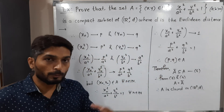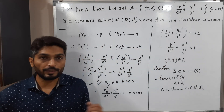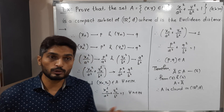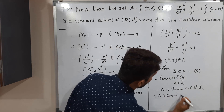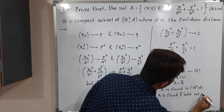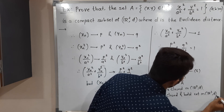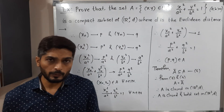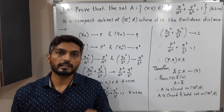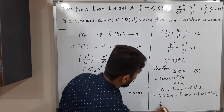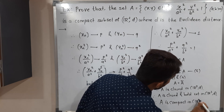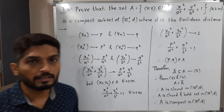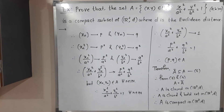Combining both parts: in the first part we proved A is bounded, and in the second part we proved A is closed. Therefore A is closed and bounded in R²D. Since in R²D a closed and bounded set is compact, we conclude that A is compact in R²D. Thus the given set A is a compact subset of R²D where D is the Euclidean distance.